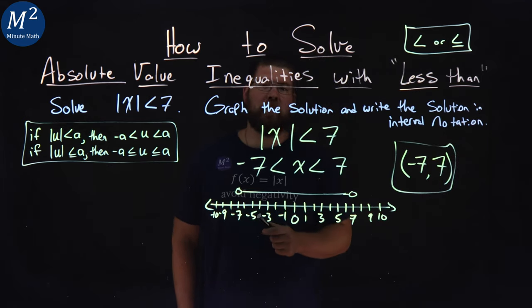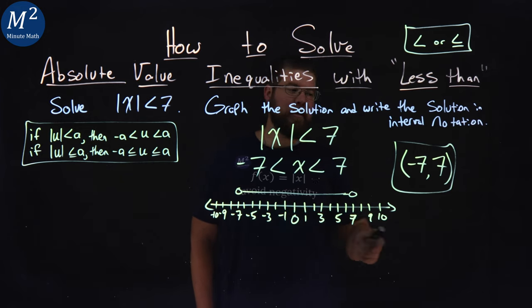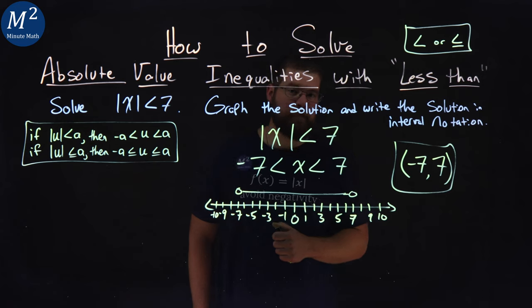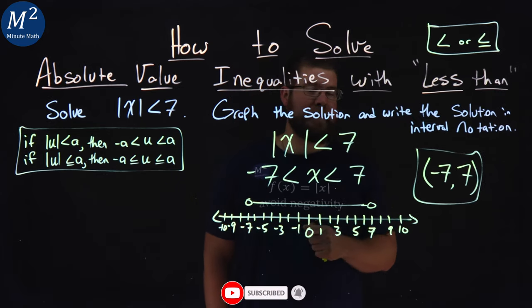So we had an absolute value inequality, and we solved it, and we graphed our solution, and we wrote our solution in interval notation. I hope you learned something here on how to solve absolute value inequalities with less than.